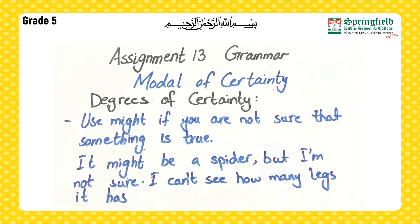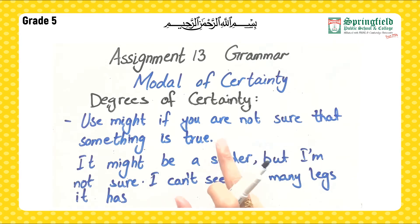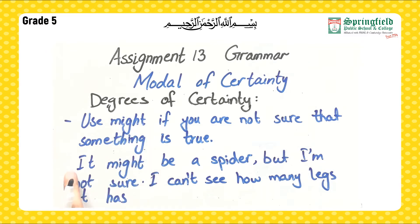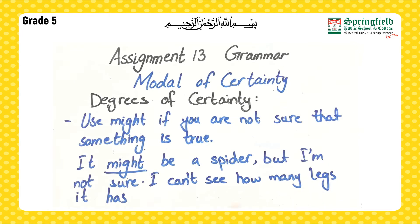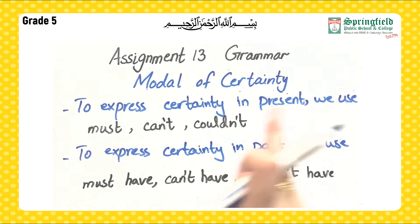Use 'might' when you are not sure that something is true. For example: 'It might be a spider, but I am not sure' — because I can't see how many legs it has. Since I'm not sure how many legs it has, I use 'might' for that.